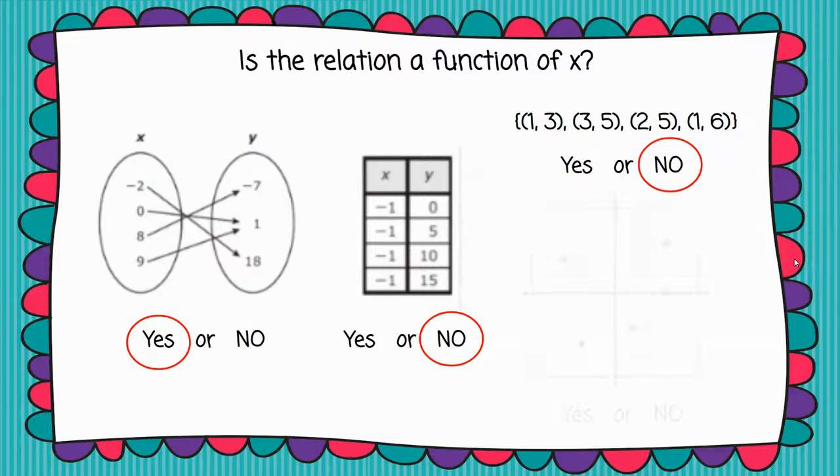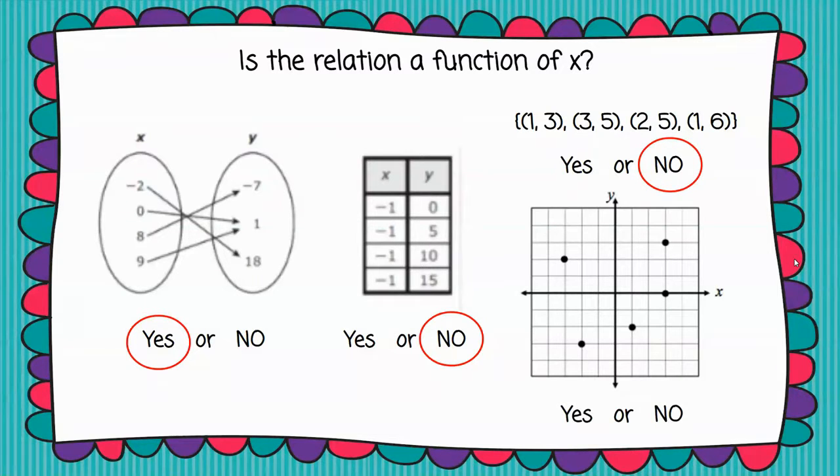All right, one last one. Let's take a look at the graph here. I want you to look at those ordered pairs. Do you see any that the x values would repeat? Exactly, those last two on the far right have the same x coordinate. In fact, they are vertically right on top of each other. That's how we know they have the same x coordinate, so this also is not a function.